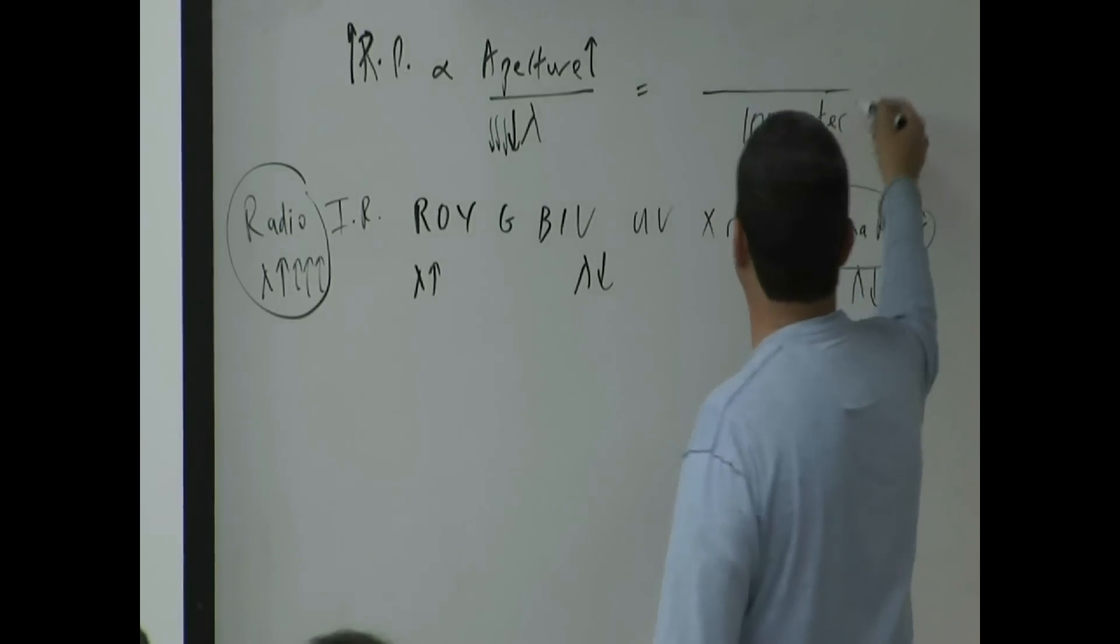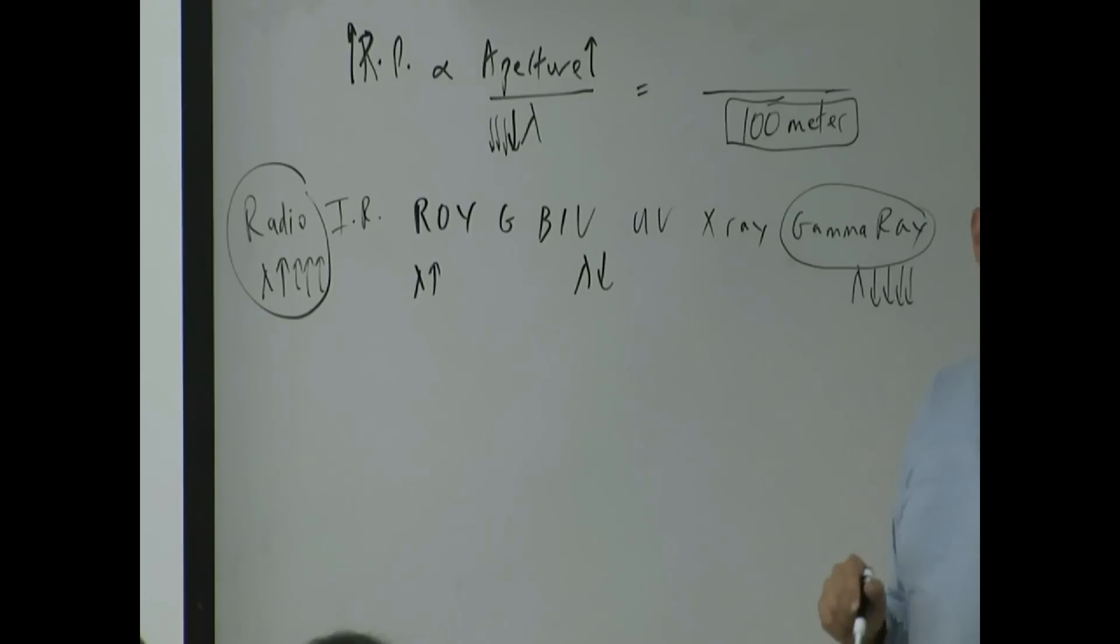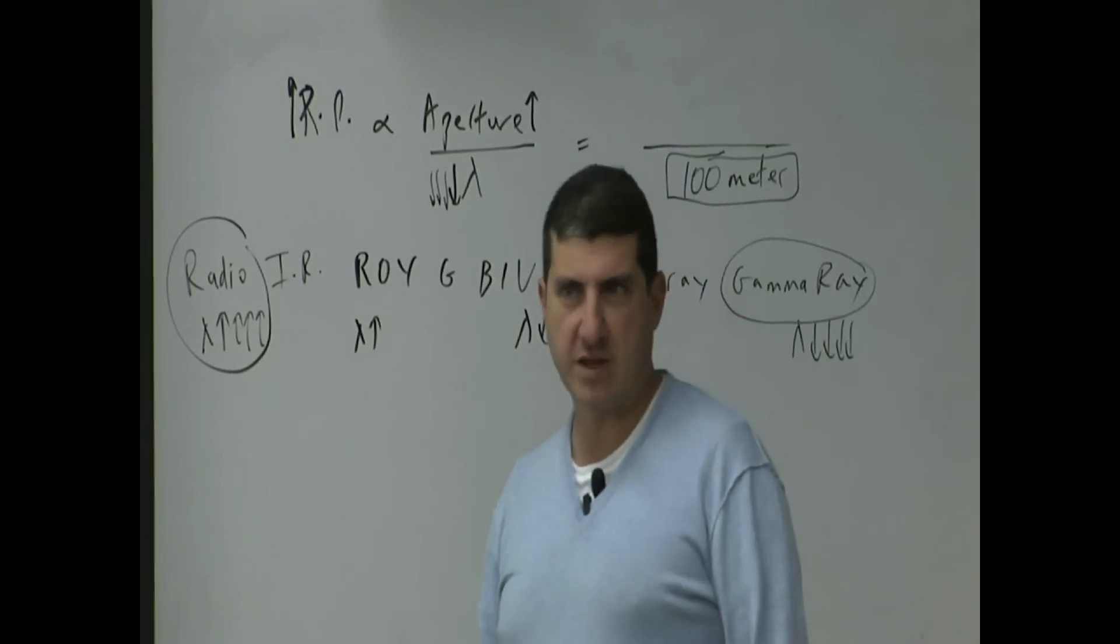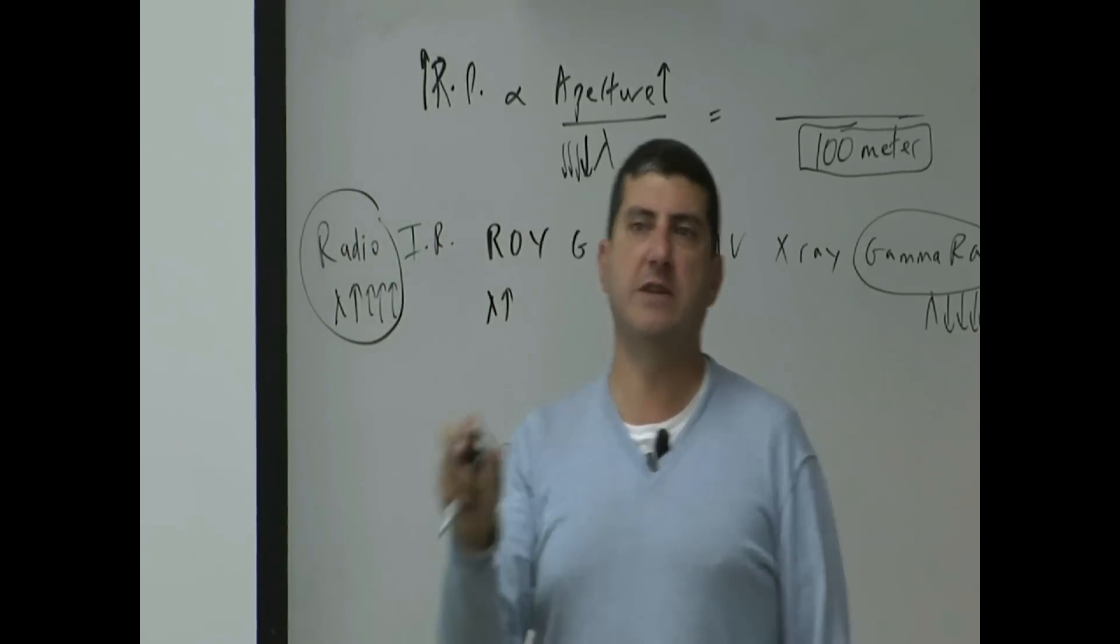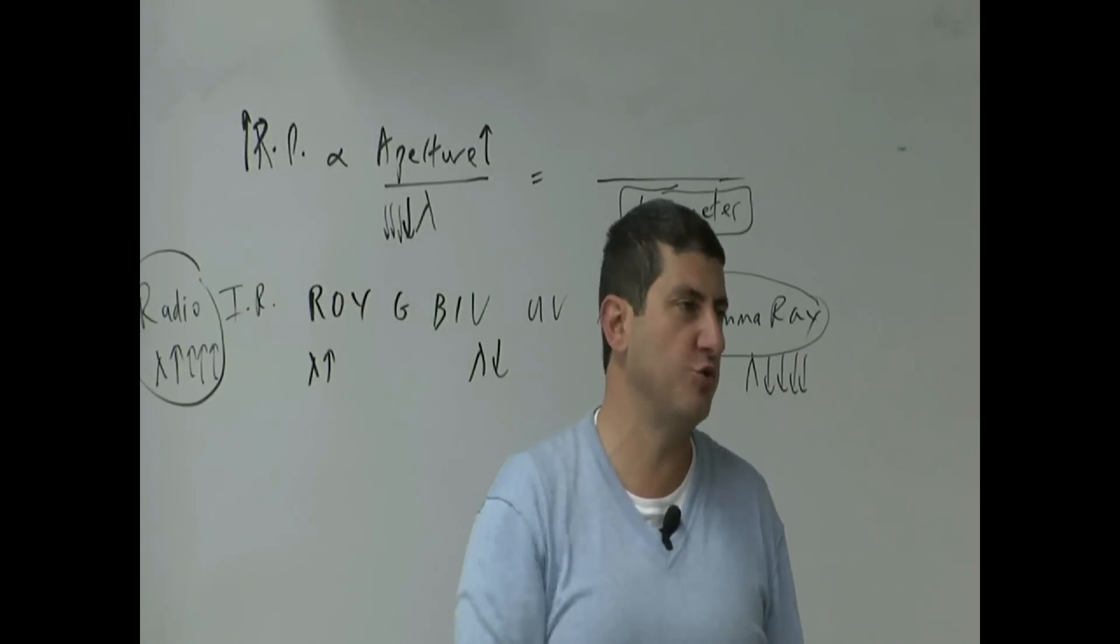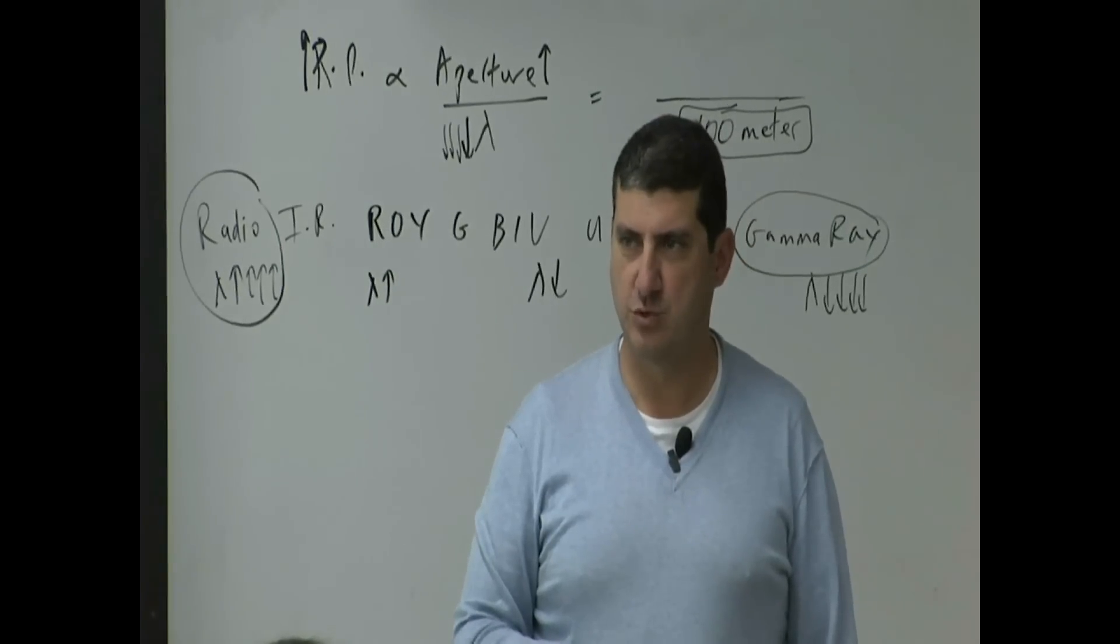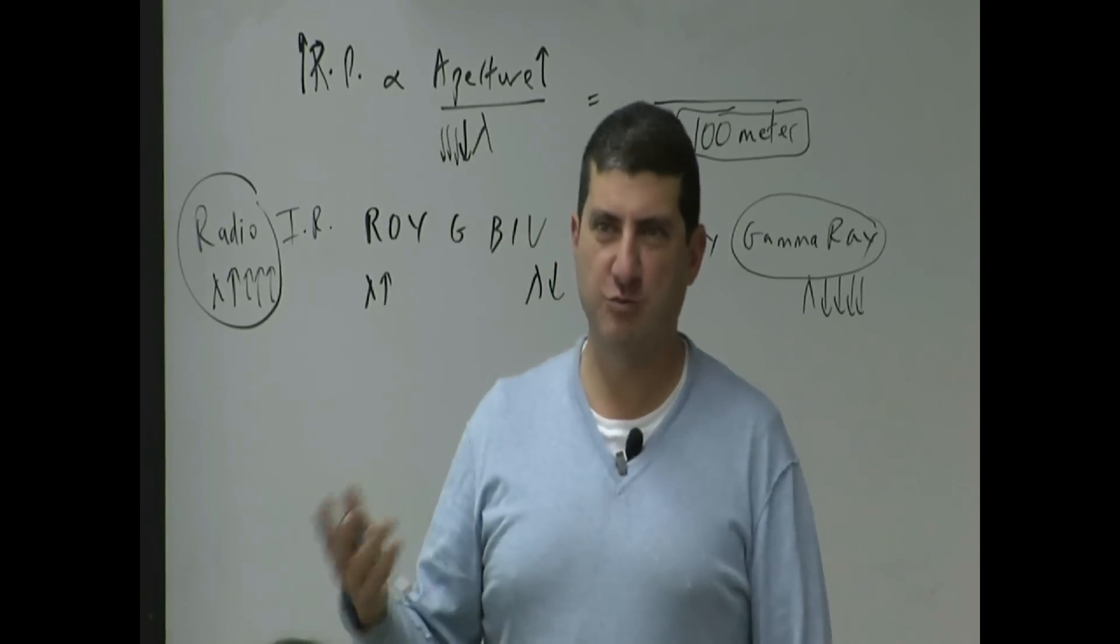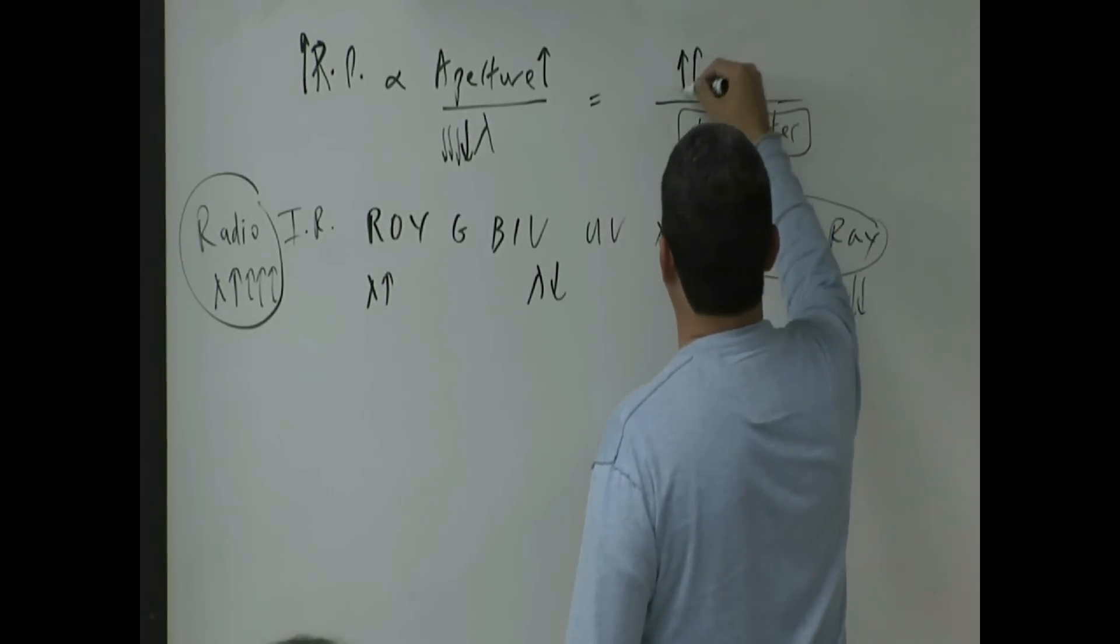So, if you wanted to make this number not so small, you had a huge number on the bottom, what would you have to do on the top? Make the number of the top big or make the number of the top small? Because you want the ratio of two numbers to not be small. If the denominator is very big, what should you do to the numerator? It's a math question. You should also make the numerator big, right? Big, big, big, big.